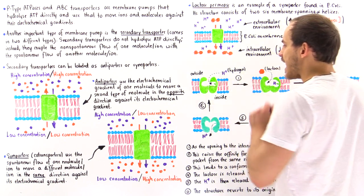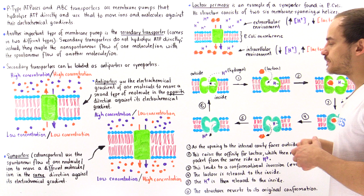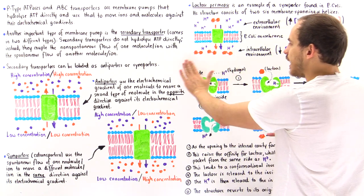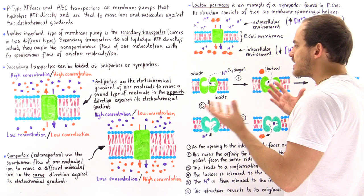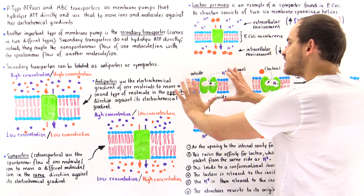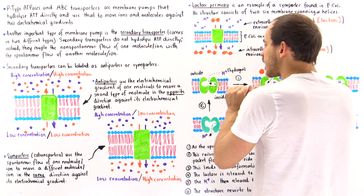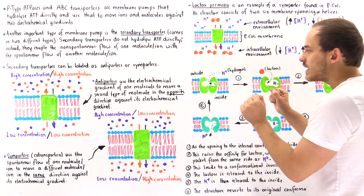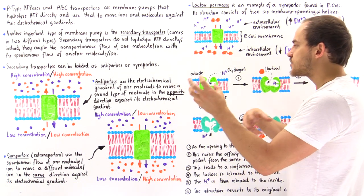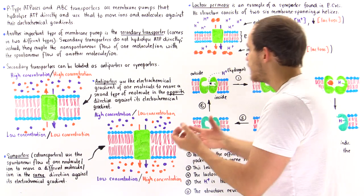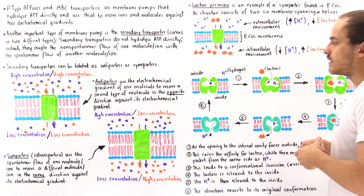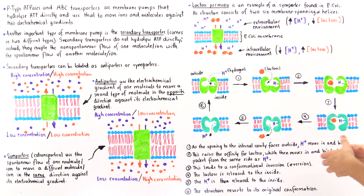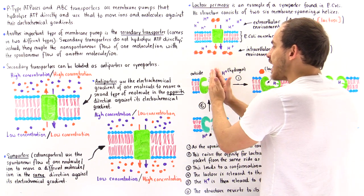Each half consists of six membrane-spanning alpha helices, for a total of 12. This is the outside and the inside of our cell. In this diagram, we see a cavity in the inside portion of the transmembrane pump, and notice that in this state it is open to the outside of the cell.